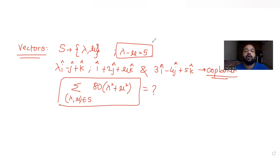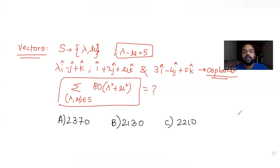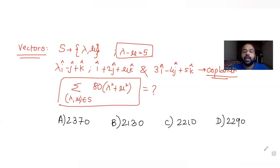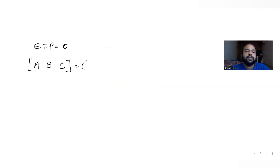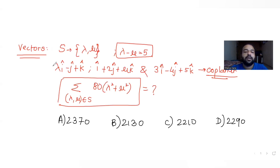The options given are: option A is 2310, option B is 2130, option C is 2210, and option D is another value. We need to figure out which one is correct. We know that whenever vectors are coplanar, the scalar triple product of the three vectors is equal to zero — that is, the box product of vectors a, b, and c equals zero.